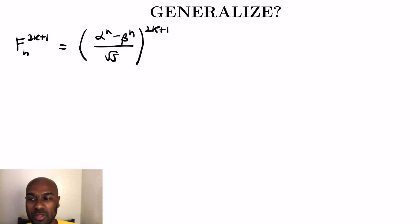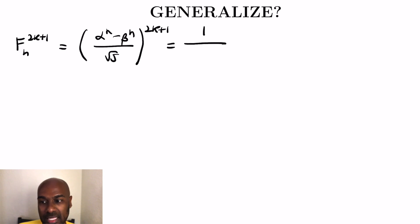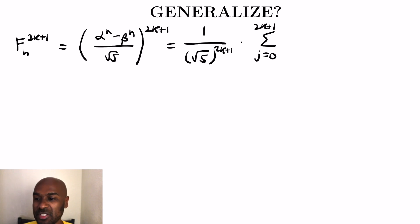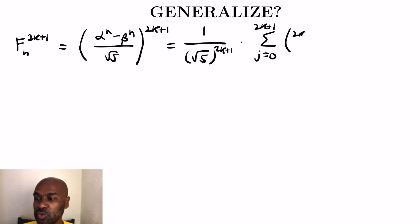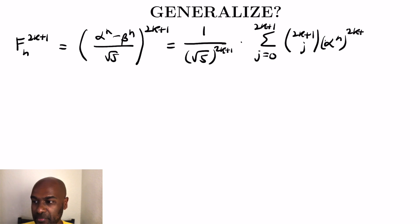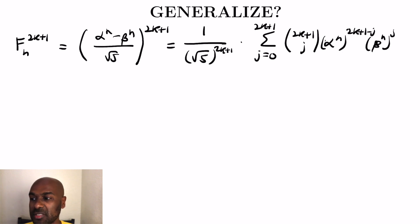To expand to the (2k+1)th power we'll need help from the binomial theorem, which allows us to expand a difference like (alpha^n − beta^n). In the denominator we take out 1/√5 raised to the (2k+1). Then by the binomial theorem we have the sum j = 0 to 2k+1 of the binomial coefficient C(2k+1, j) times alpha^n raised to (2k+1−j), times beta^n raised to the j. Because the second term has a negative sign, we also multiply by (−1)^j.